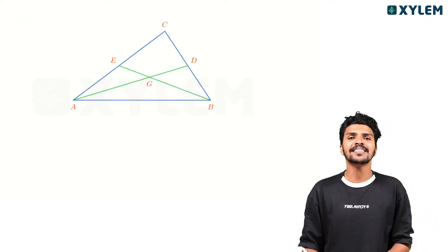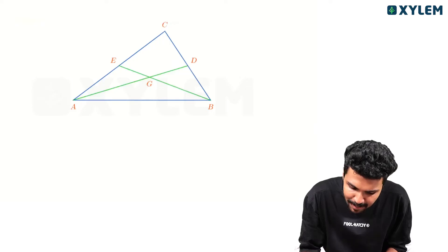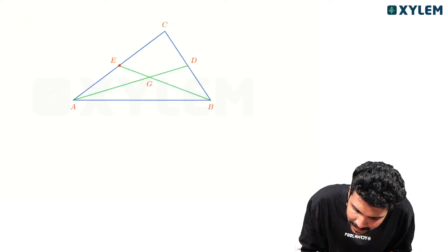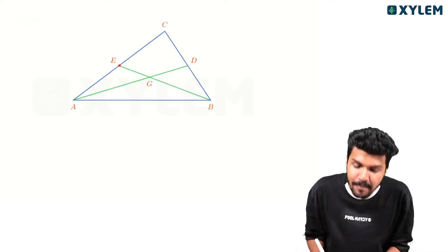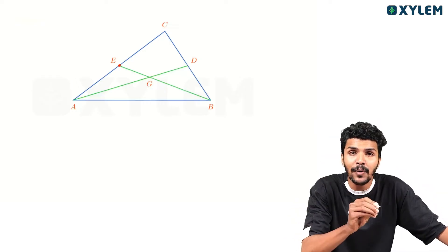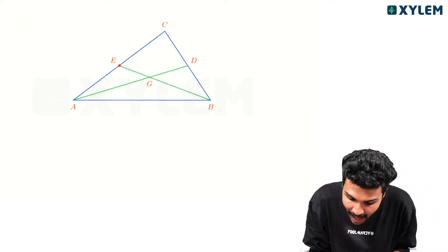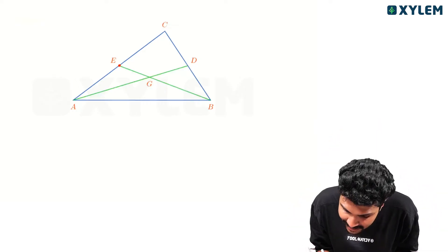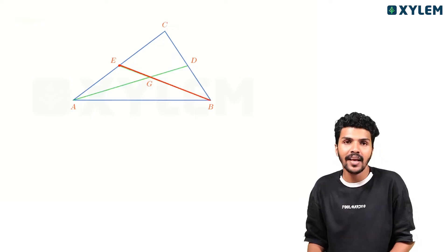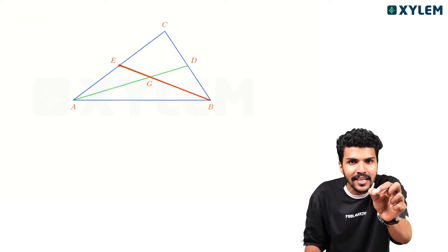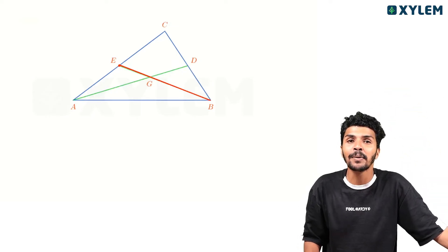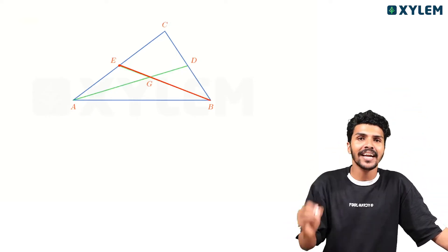Now we have a triangle ABC. What is the triangle? What is the midpoint? The midpoint is E. You have to go to the top — that line is the median.